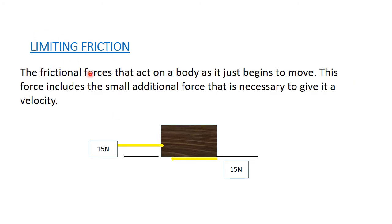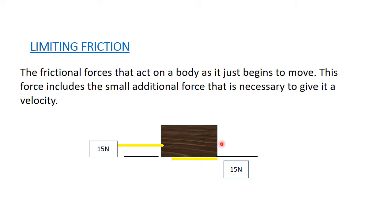Limiting friction is the frictional force that acts on a body as it just begins to move. This force includes the small additional force necessary to give it a velocity. For example, if we exert 15 Newtons on the block of wood, and the table exerts an opposing force, the object just begins to move. Beyond this limit, the table cannot increase the frictional force — that is why we call it limiting friction.